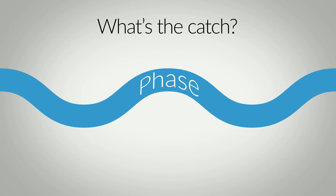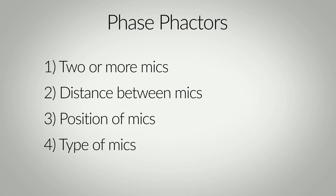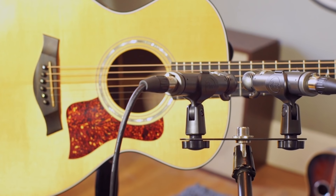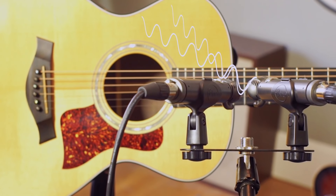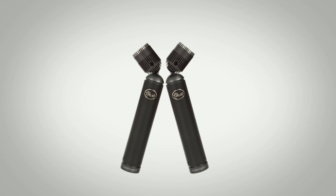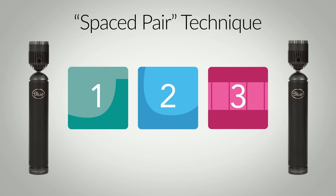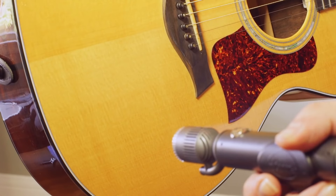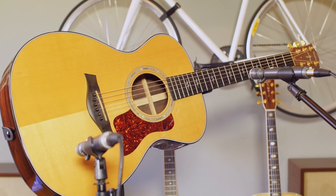One pitfall with stereo recording to be aware of is phase. Phase cancellation can occur when two microphones pick up sound waves that arrive at different portions of the waveform cycle. The coincident mic placement mitigates phase artifacts because the capsules are so close together that sound waves arrive at nearly the same time. However, you might find that coincident micing doesn't give you as wide a stereo image as you'd like. For a wider stereo image, we use what's called a spaced pair technique — placing one microphone at the lower bout position and one off the 12th fret — giving a nice stereo image that captures the tonal variations of an acoustic guitar from body to neck.